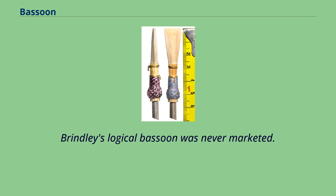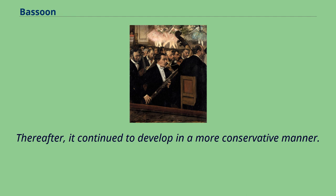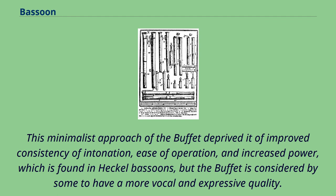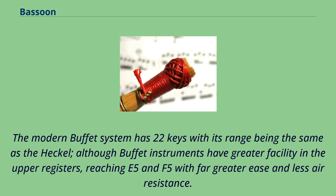The buffet system bassoon achieved its basic acoustical properties somewhat earlier than the Heckel. Thereafter, it continued to develop in a more conservative manner. While the early history of the Heckel bassoon included a complete overhaul of the instrument in both acoustics and keywork, the development of the buffet system consisted primarily of incremental improvements to the keywork. This minimalist approach deprived the buffet of improved consistency of intonation, ease of operation, and increased power found in Heckel bassoons, but the buffet is considered by some to have a more vocal and expressive quality. The modern buffet system has 22 keys with its range being the same as the Heckel, although buffet instruments have greater facility in the upper registers, reaching E5 and F5 with far greater ease and less air resistance.